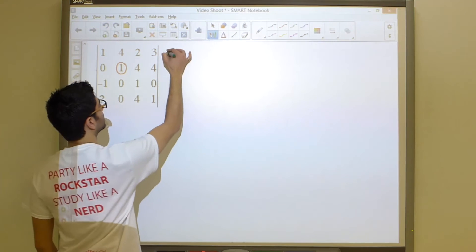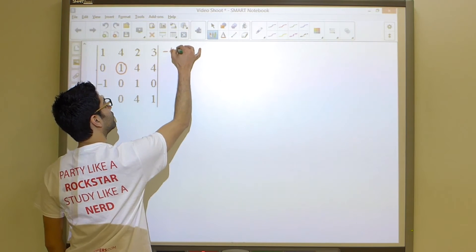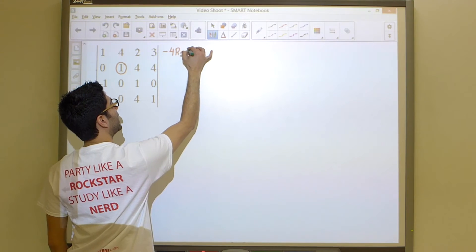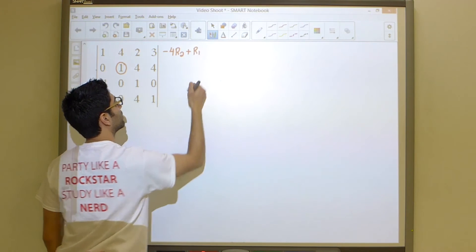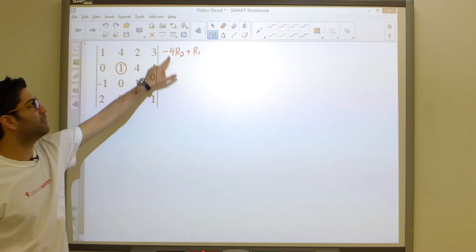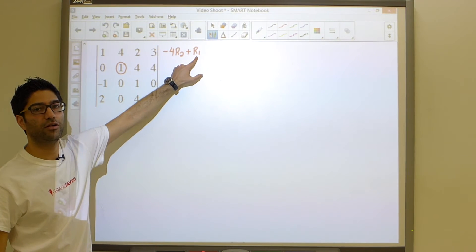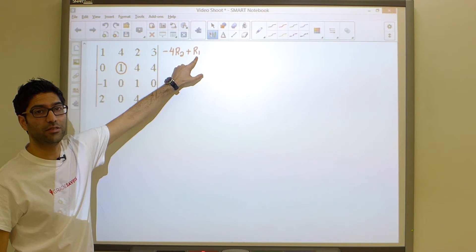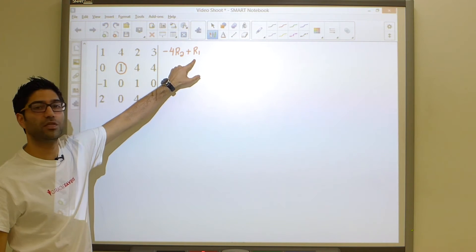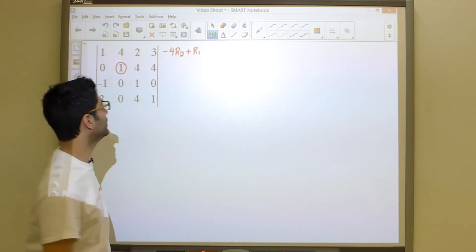So in order to do that, I'm going to multiply my second row by negative 4 and add that to the first row. Performing this row operation, adding a multiple of one row to another, remember, does not change our determinant. So our answer will not change if we perform this operation. So let's do it.